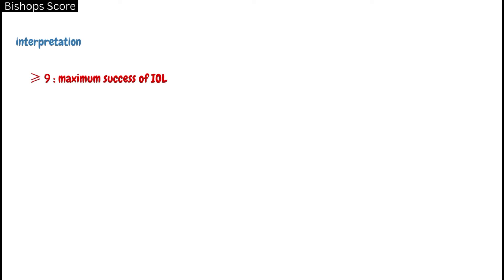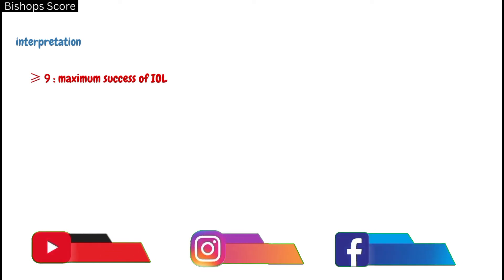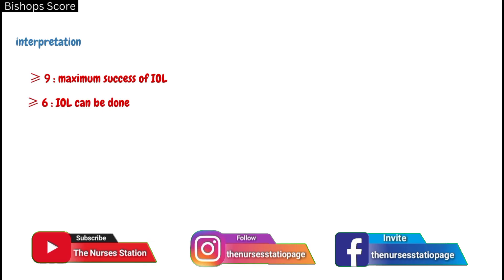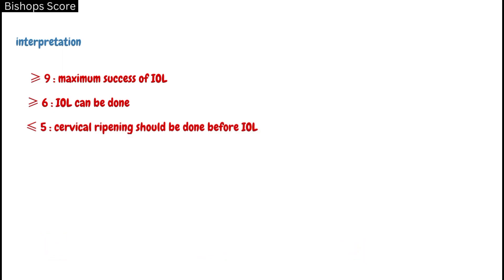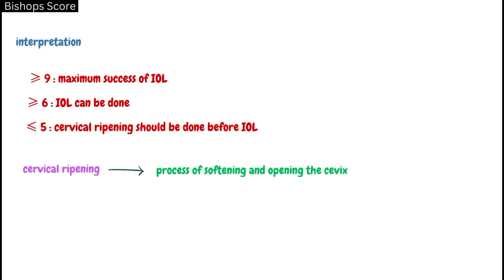Interpretation of Bishop's score: a score of greater than or equal to 9 indicates maximum success of induction of labour; equal to or greater than 6 indicates that induction of labour can be done; and less than or equal to 5 indicates that cervical ripening should be done before induction of labour. Cervical ripening is the process of softening and opening the cervix before the start of induction of labour.